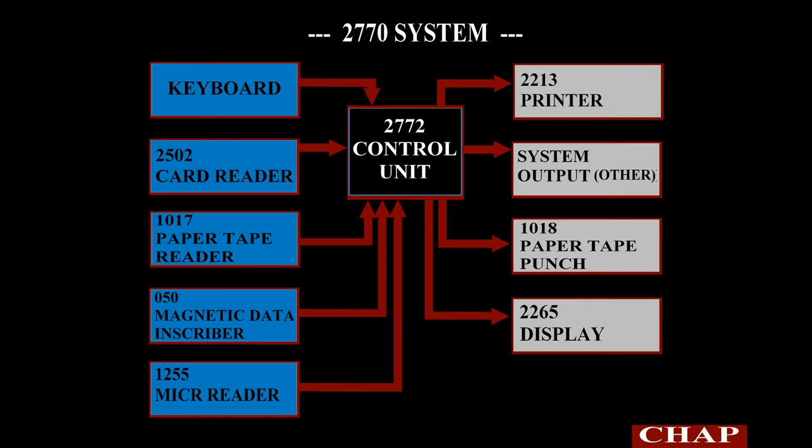The 2770 offers the user a keyboard for manual input, an output printer, and a maximum of two additional input and two additional output devices. Thus, a wide variety of terminal configurations can be selected.